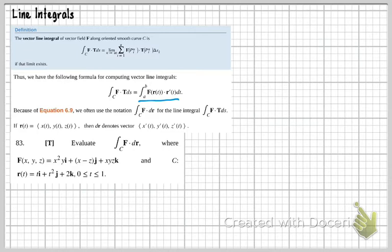Let's take a look at example 83. It says evaluate the integral of f dot dr. Now notice, I said f dot dr, but take a look below. Because of equation 6.9, we often use the notation the integral of f dot dr for the line integral f dot t ds. So the integral of f dot dr is equal to the integral of f dot t ds, or I can say f(r(t)) dotted r prime t dt - they're all equal, and that's what I want you to see here.